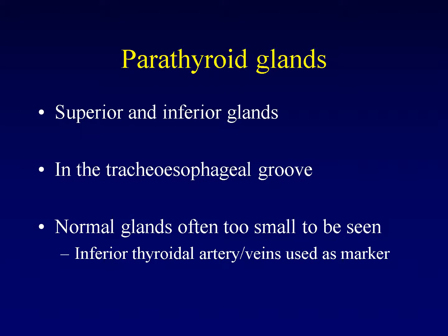You have four parathyroid glands, two on each side — a superior and inferior on each side. These live normally within the tracheoesophageal groove.